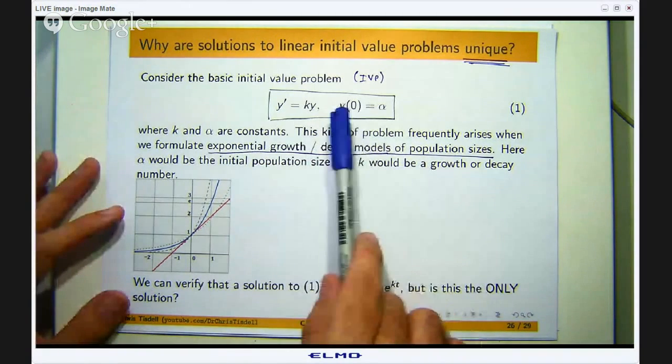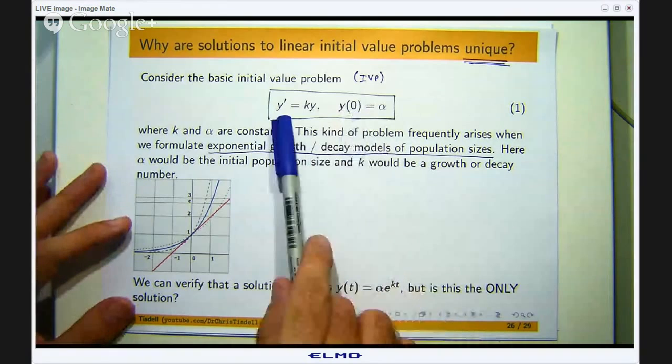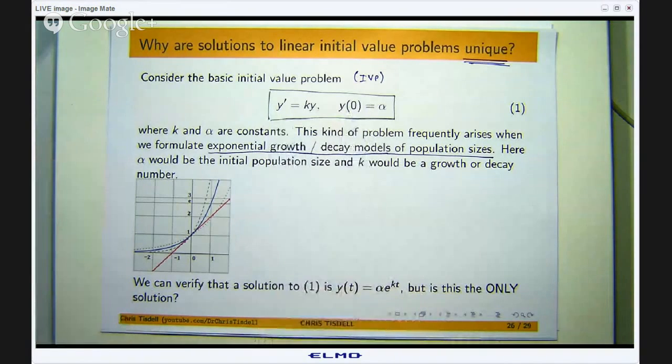So t might be time and y(t) might be the size of the population at time t. Now if k is positive then the population is growing, if k is negative then the population would be decaying, and α would be the initial size of the population at time t equals 0.